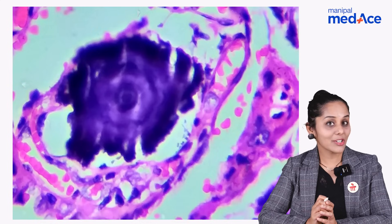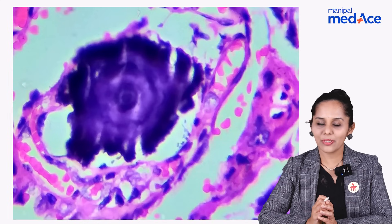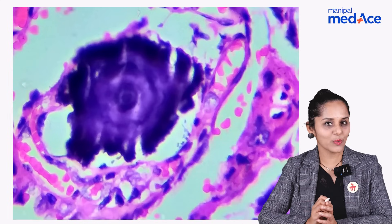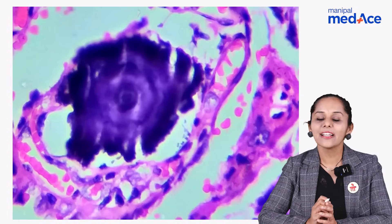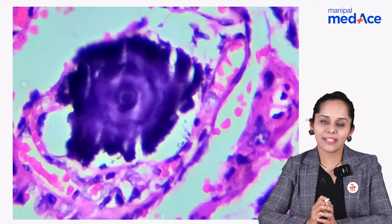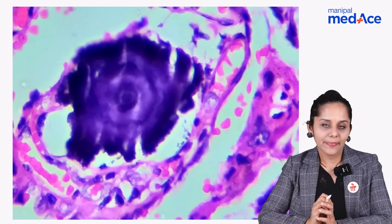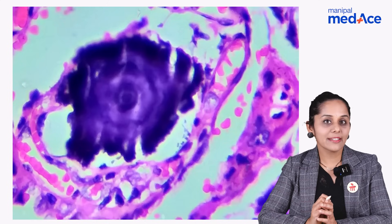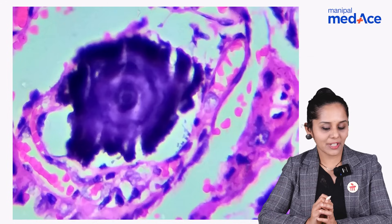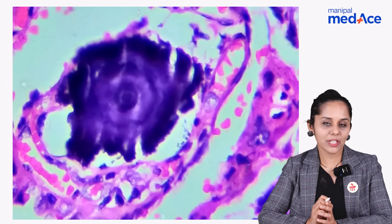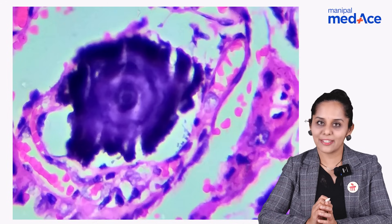Question number one: what is the special stain for calcium? It is Von Kossa, and the other special stain is alizarin red. The second question is, is it dystrophic or metastatic calcification in a picture of a psammoma body? The answer is, it is dystrophic calcification.